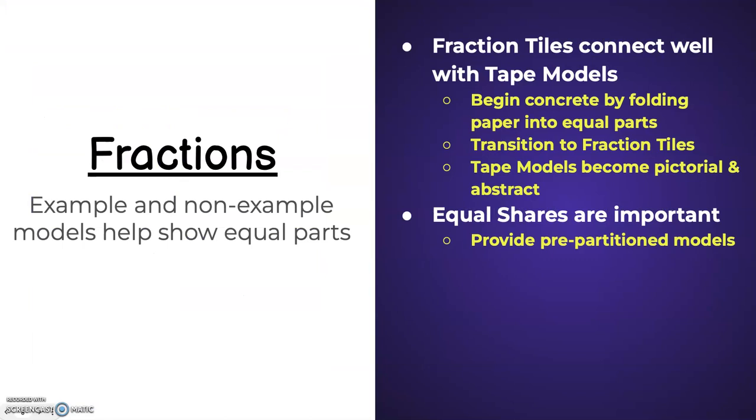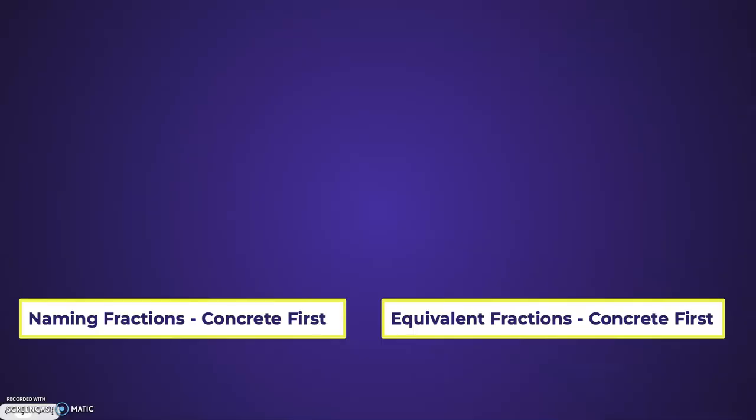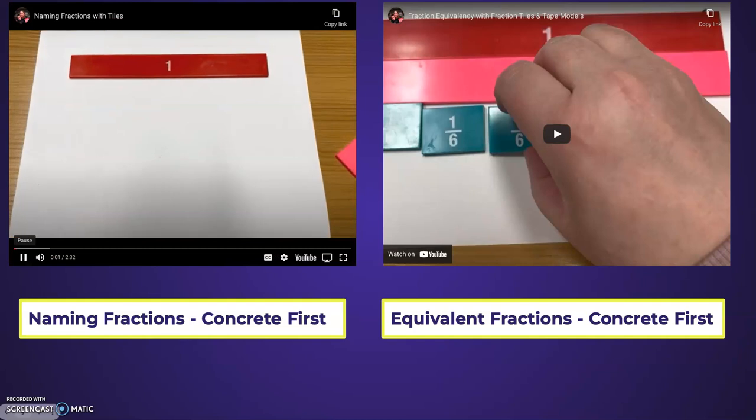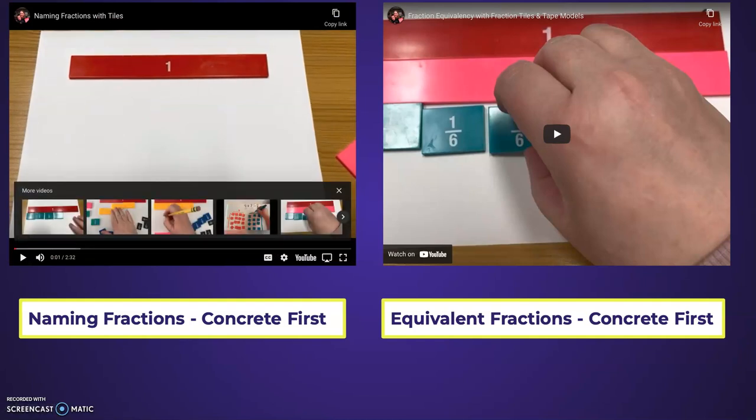Let's take a look at fractions now. So fraction tiles really are a concrete model of a tape model. So we're beginning with the concrete using folding paper, we transition to those fraction tiles that are pre-portioned for us, and then we end with our tape models being pictorial and abstract. And we're using those pre-partition models to really reinforce that equal shares are important. So we have two videos here. We have the first one, which is naming fractions, and the second one is looking at equivalent fractions. So take a moment, watch these videos to see how this works with concrete models.